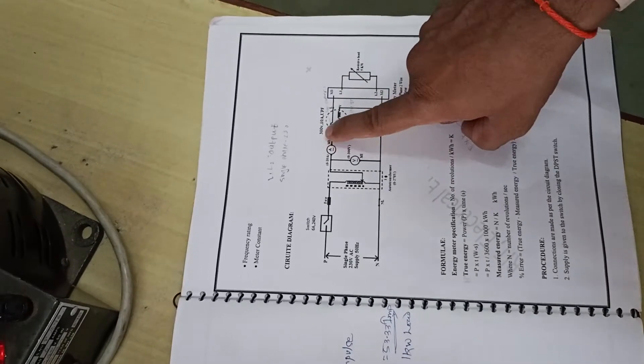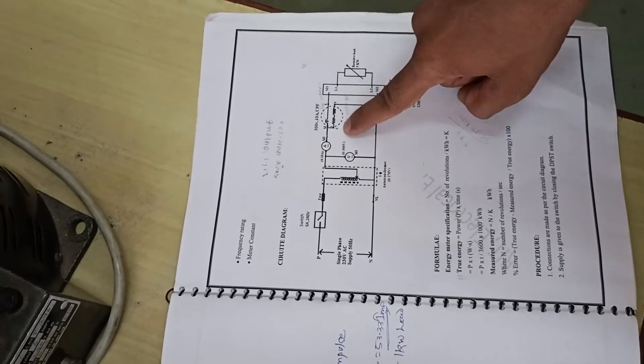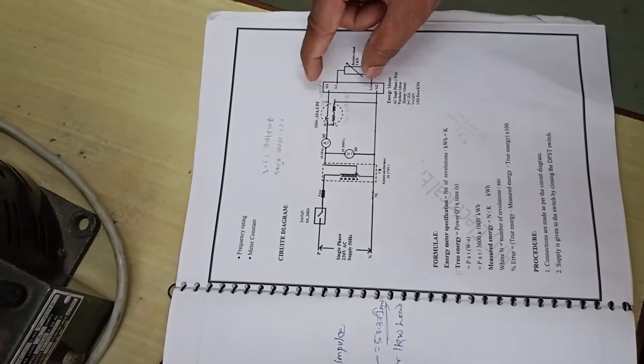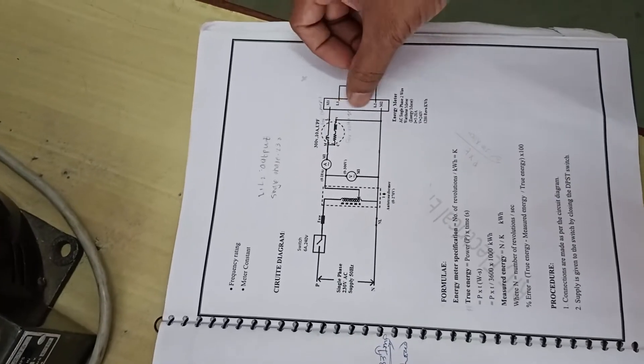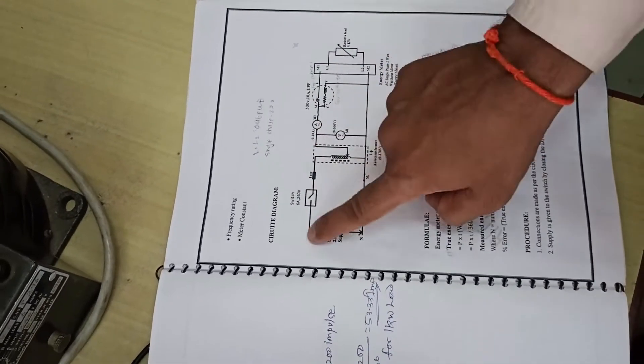In wattmeter we have 4 points M, L, C and V where M and C will be shorted. After that we have our energy meter with a resistive load of 5 kilowatt.